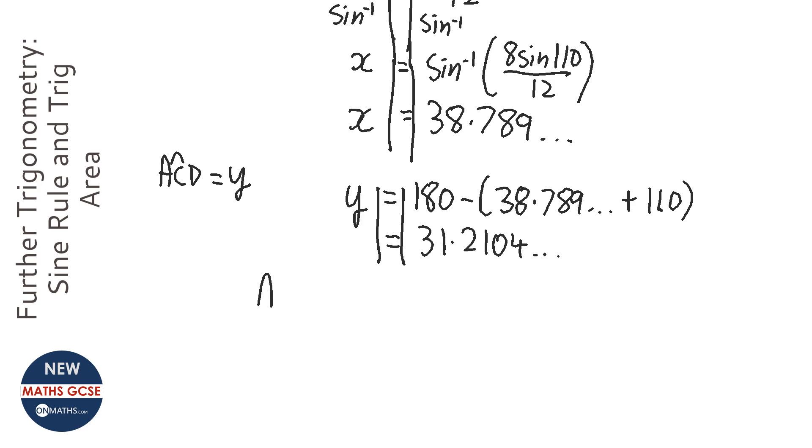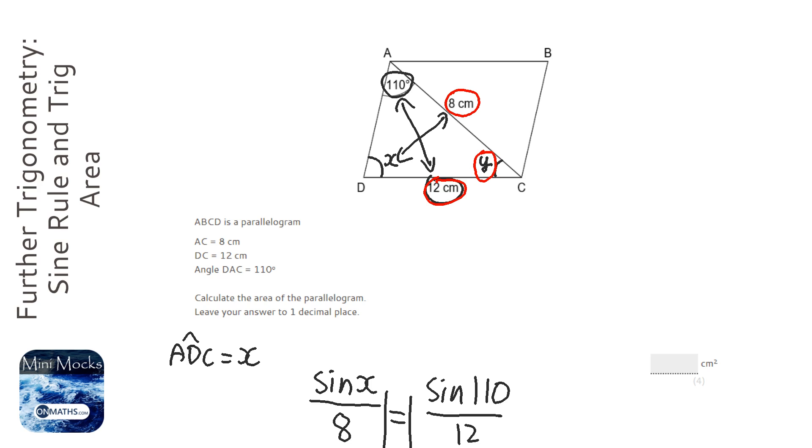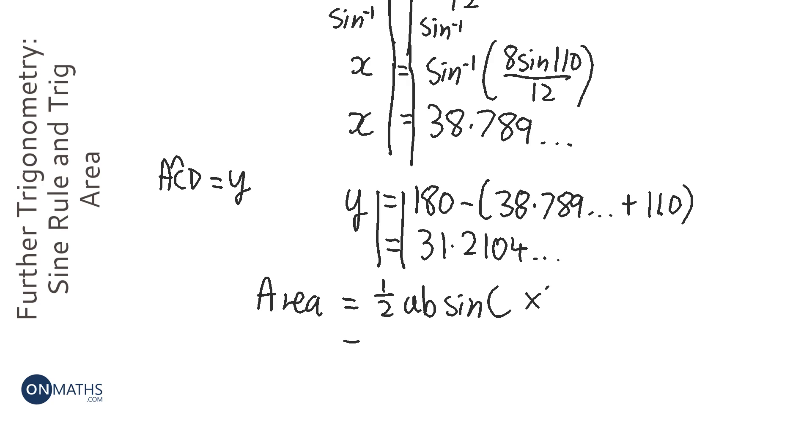It just says that area equals half AB sine big C. The problem is actually, we've got two triangles. We've got a triangle here and then we've got an identical triangle here. And it is identical because the diagonal of a parallelogram cuts it in half exactly. So what we also need to do is then times this by 2. Now if we notice that the half and the times 2 will cancel.